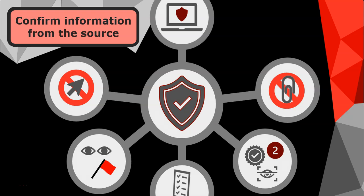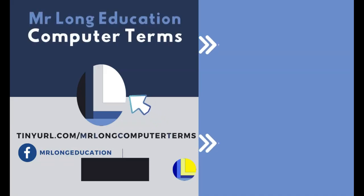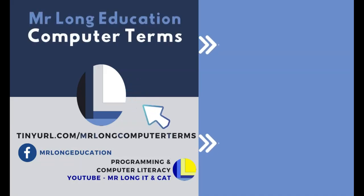Confirm information from the source. If you are unsure whether information is legitimate, go directly to the source and ask them. Don't use the links or addresses in the message you received — go directly to the company and ask them if the information is true. Hopefully that will help protect you against potential spoofing attacks.